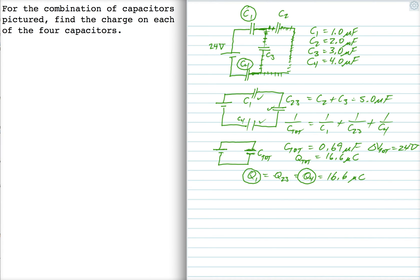So now let me deal with Q23. For this capacitor, what I need to do now is I need to find the voltage drop across it. The voltage drop across this capacitor is the charge over the capacitance. So that's 16.6 microcoulombs over 5 microfarads. That's 3.31 volts. And since the voltage drop across this capacitor is 3.31 volts, that means the voltage drop across each of these two capacitors is 3.31 volts.